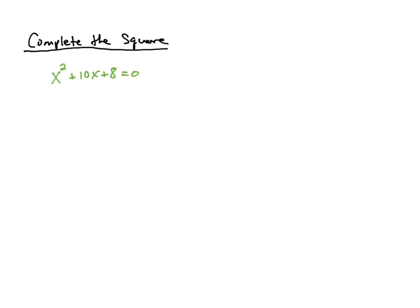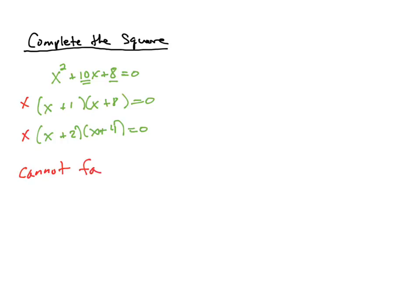Let's look at our third method: completing the square. In this example, we have x squared plus 10x plus 8 equals 0. This quadratic is already equal to 0. When we try to factor — the leading term is x squared, so x times x gives us x squared — we want factors of 8 that add up to 10. We could try 8 and 1, but that won't give us a 10x in the middle. We could try x plus 2 and x plus 4 — that doesn't work either. So since neither works, we cannot factor here and we need a different method.